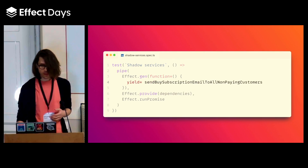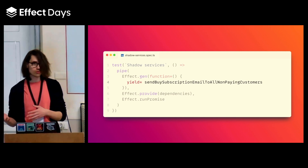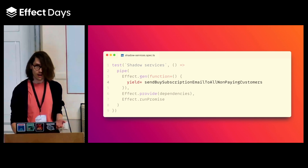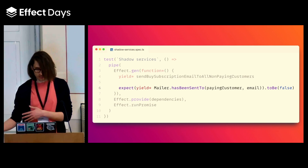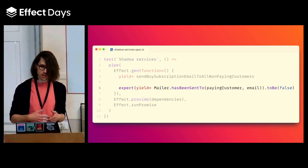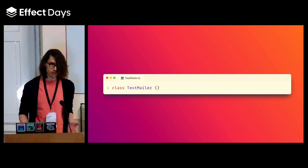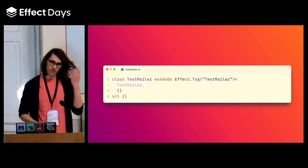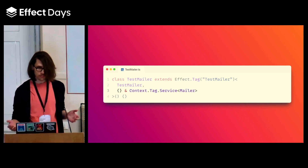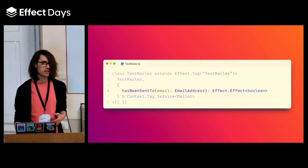New test again. The subject under test — with the longest name ever — is send-by-subscription email to all non-paying customers, and we want to check that we indeed do not send that email to paying customers. What we'd like to have is something like a mailer that has been sent to a customer email — a way to know if an email was sent to someone or not. But it's not part of the mailer interface, and we don't want it there, so let's create our own shadow service. I'm going to call this the TestMailer — because I have a wild imagination — and make it an Effect service. Since we're going to override the mailer with it, we have to support its operations, so let's require those. And now, on top of that, that's where the fun begins — we can add any additional operation that we want. In this case, hasBeenSentTo.